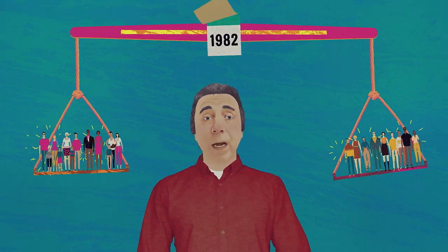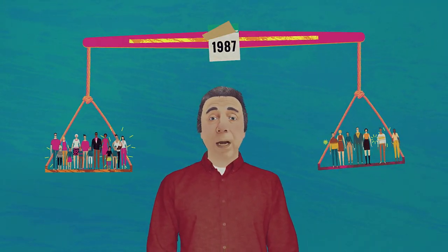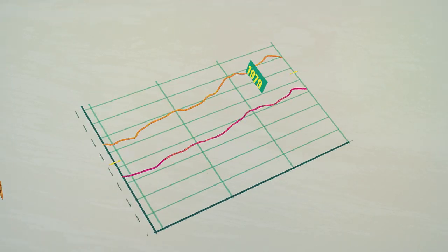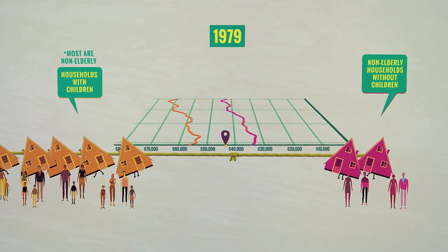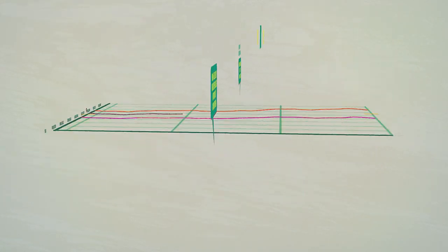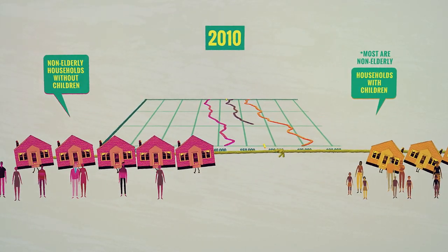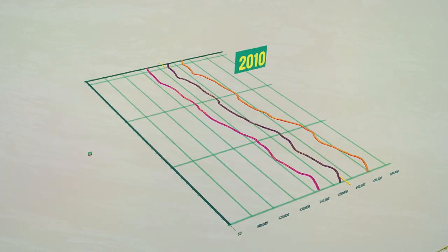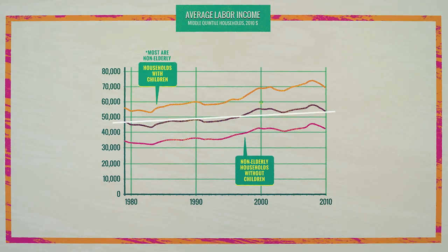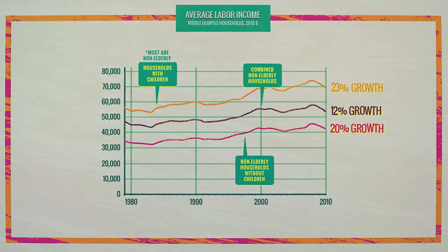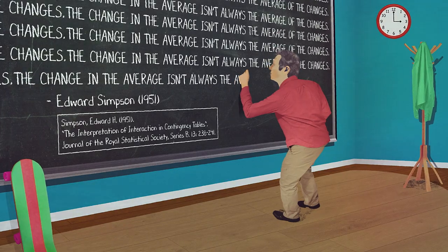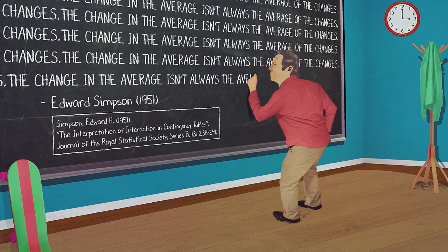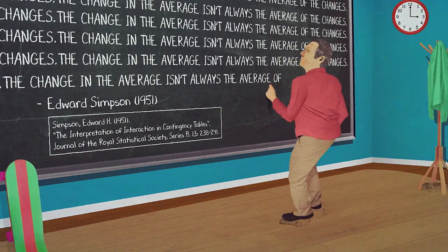That's because the two groups don't stay the same size relative to each other over the 31 years. When you combine the two groups, you're taking a weighted average, but the weights don't stay the same over time. In 1979, there are more households with children, so average household income for the combined sample is closer to the average of the households with children. In 2010, more households without children, so the 2010 average is closer to the average for families without children. That flattens the line — it's not even close to being between 20 and 23. That's an example of what's called Simpson's Paradox: the change in the average isn't always the average of the changes.